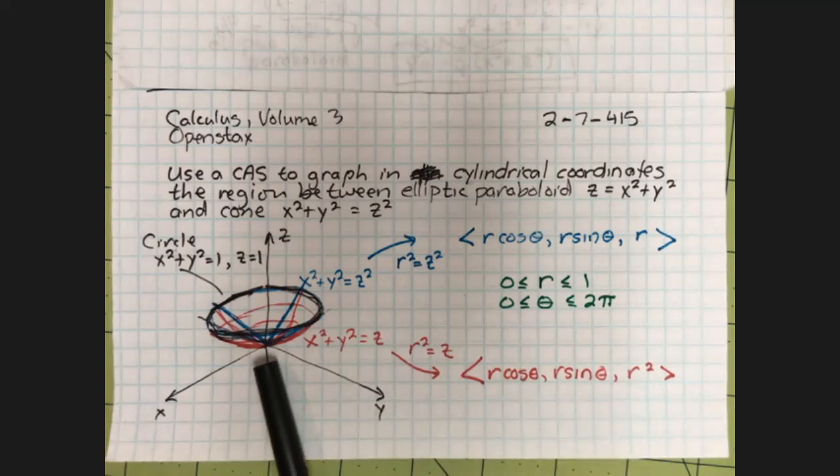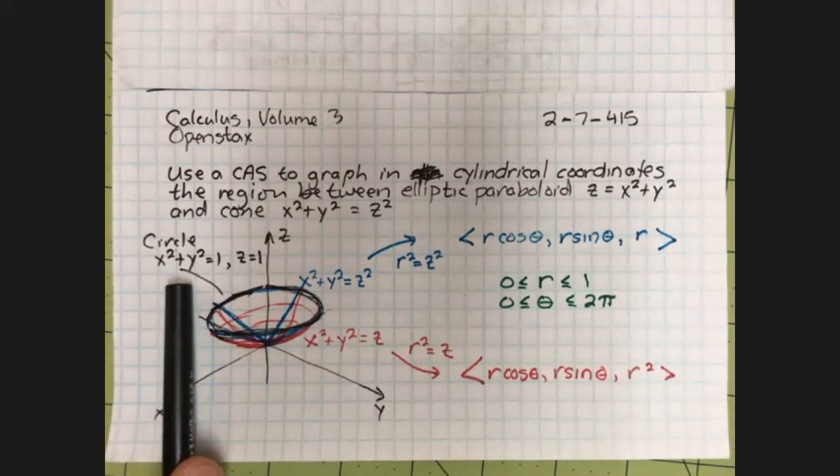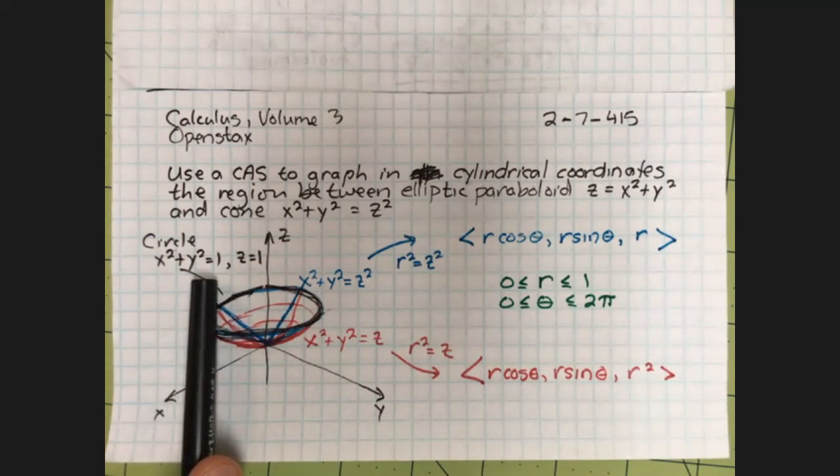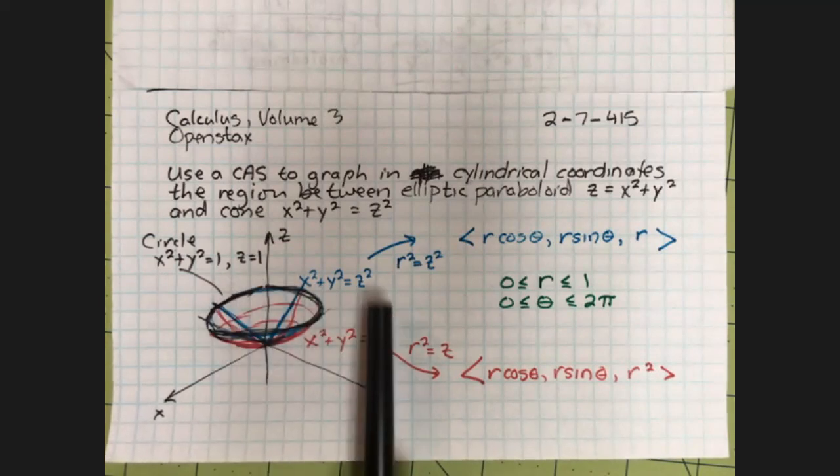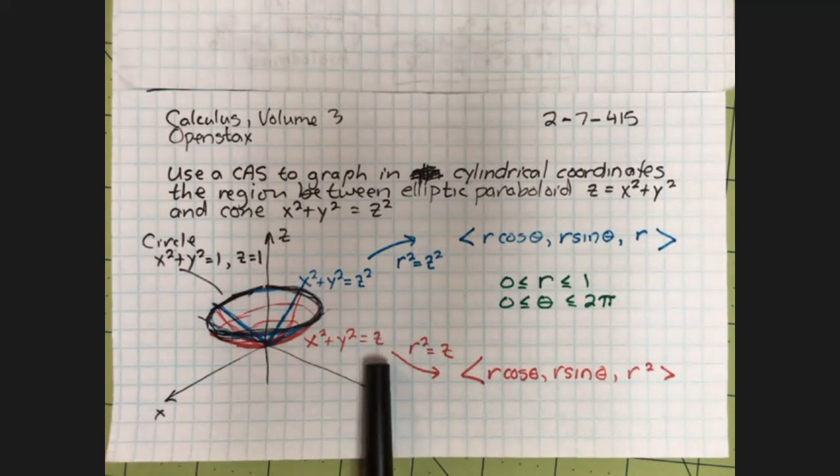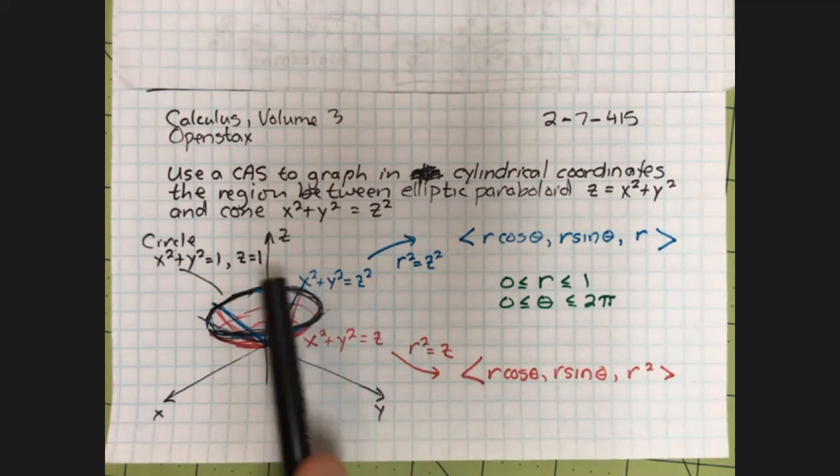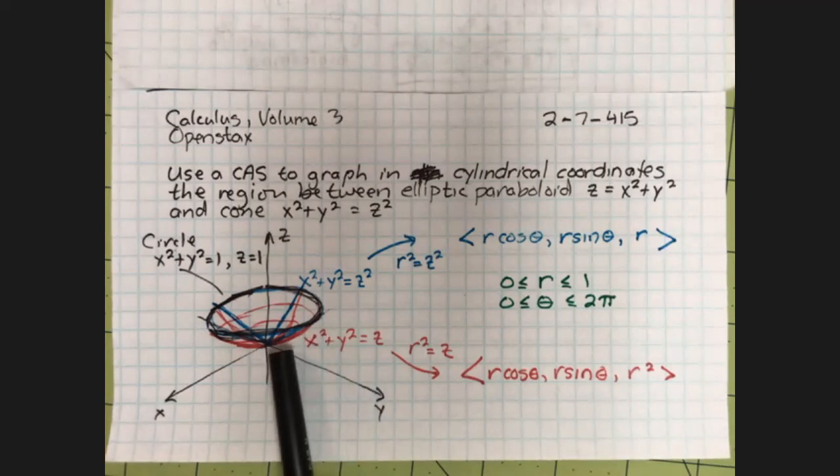Notice, as we said, these things meet at the origin. These two surfaces meet at the origin above the x, y plane. They also meet at the circle x squared plus y squared equals one and z equals one. Notice if x squared plus y squared is one in both cases and z equals one, that would satisfy both of these equations. So we're only going to be concerned with radiuses between zero and one and theta as it travels all the way around the z axis, zero to two pi.